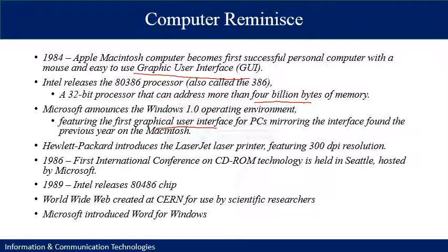In 1989, Intel released the upgraded 80486 processor, which was widely used in the early 1990s and early 2000s. In the same year, the famous World Wide Web was created at CERN laboratories for use by scientific researchers. Microsoft also introduced the famous program Microsoft Word for Windows, for writing documents.